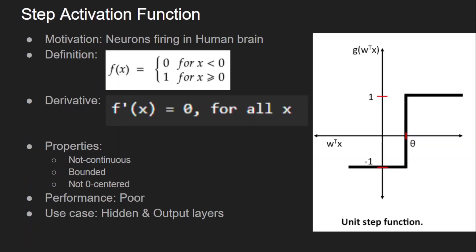Let's start with our first activation function which is the step function. The motivation for the step function is from the human brain. It is observed that for different tasks, different neurons get fired in our brain. This firing of the neuron is represented mathematically as 1 or 0, setting the motivation that if the neuron has more information it should be fired, otherwise it should not. The definition: if the input is greater than or equal to 0 the output is 1, otherwise it is 0. The derivative is 0 at all points because it's flat.